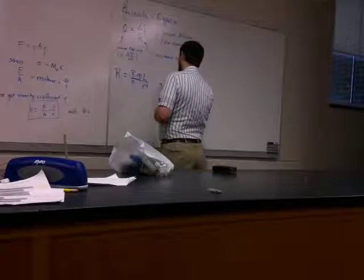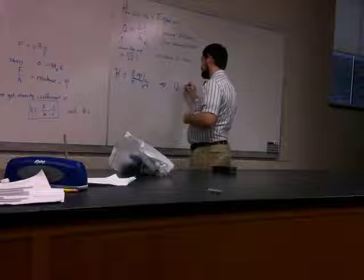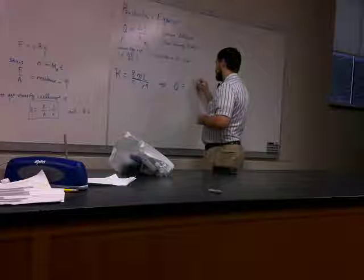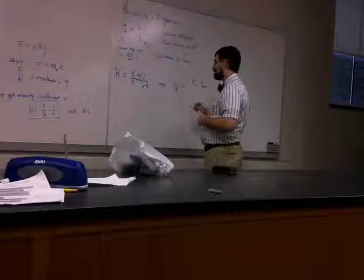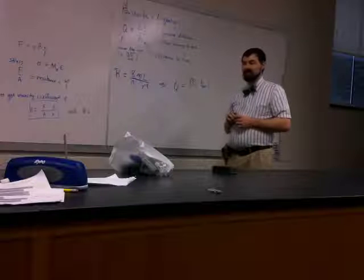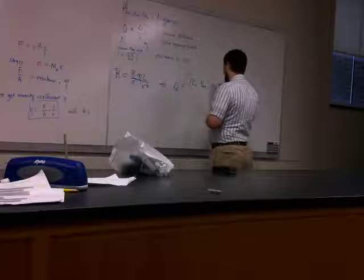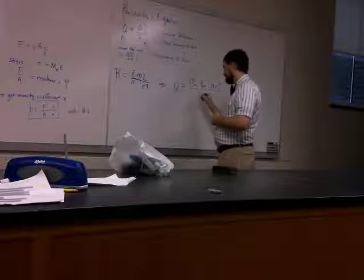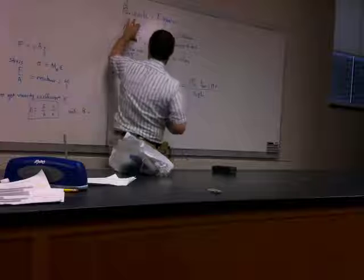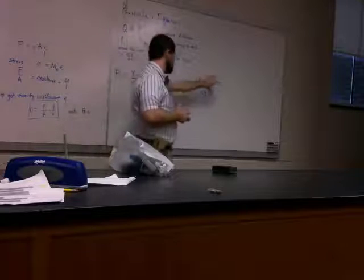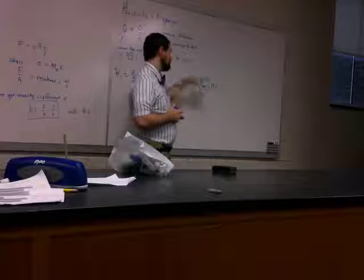Putting it all together: the volume flow rate Q = ΔP × π r⁴ / (8η L). This is Poiseuille's equation with directly measurable quantities.